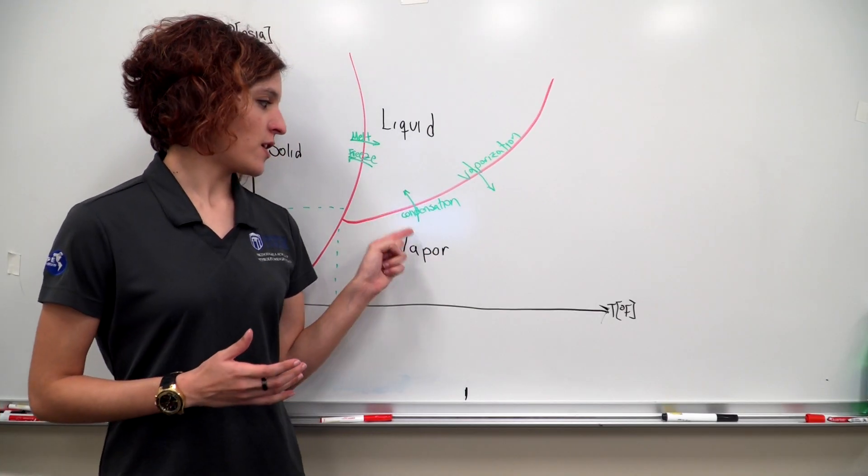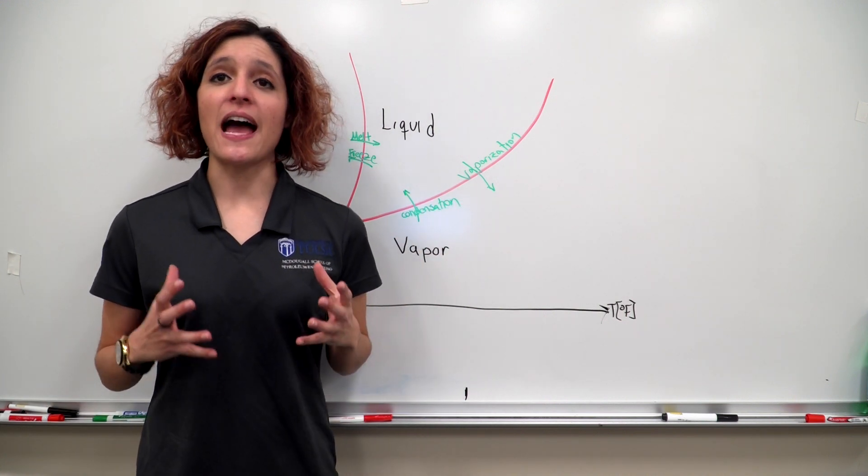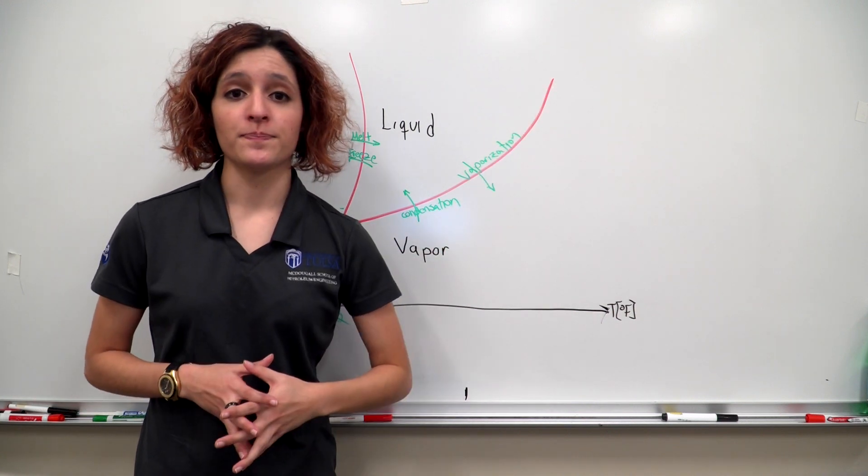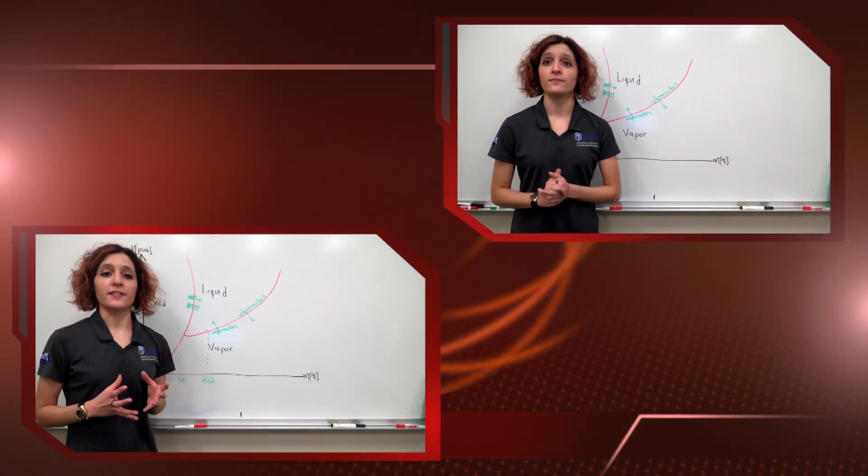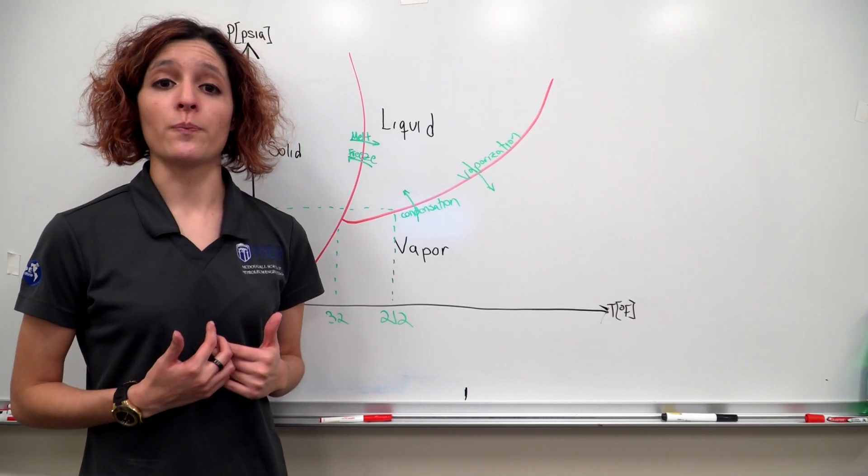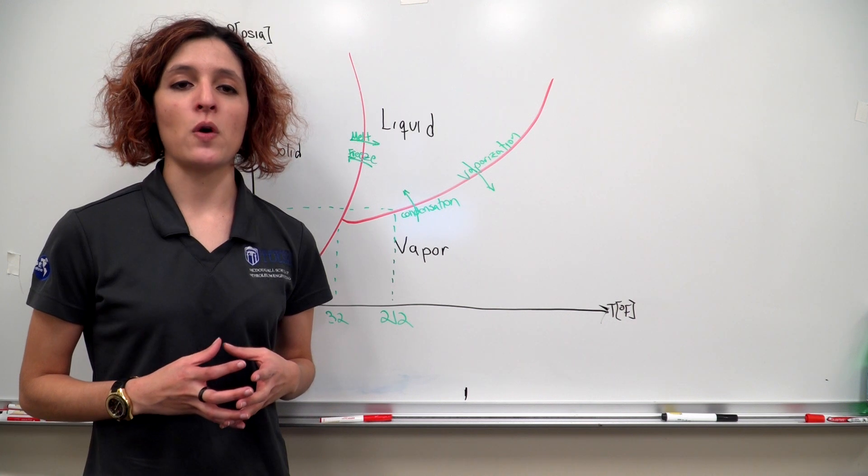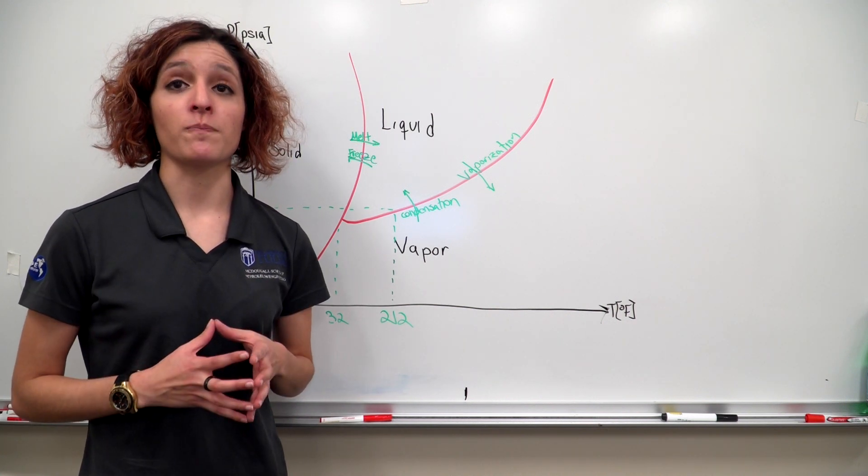We will consider condensation and vaporization. This happens when we cross what is called the vapor pressure line by changing pressure, temperature, or both. First way to cross from a liquid to a vapor would be isobaric heating or cooling. This simply means the component does not experience a change in pressure.